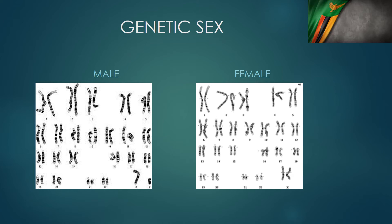Then there is genetic sex. We generally say if somebody is XX they are female, and if somebody is XY they are male. That is another way we use to categorize the sex of somebody — their genetic sex.